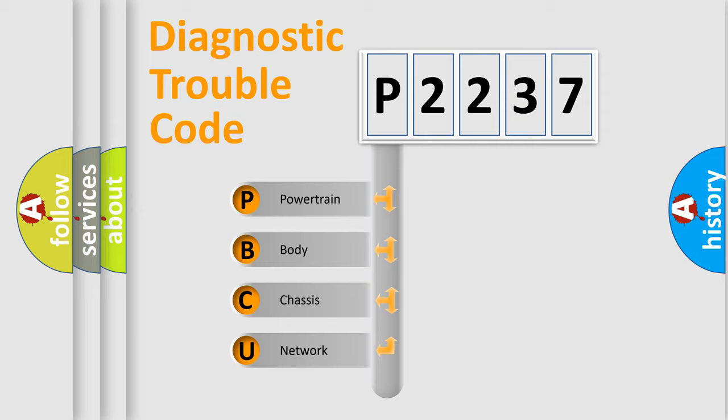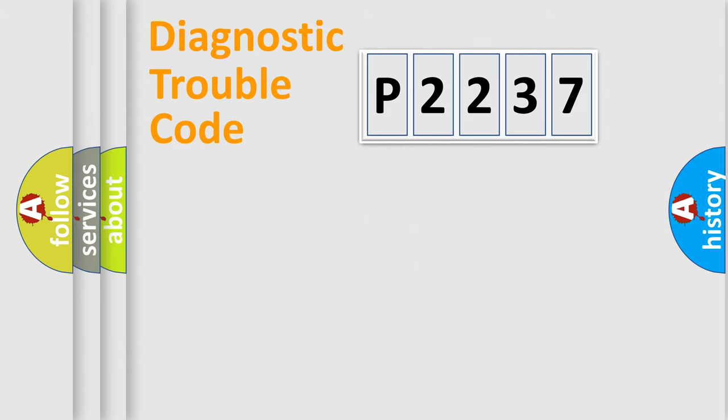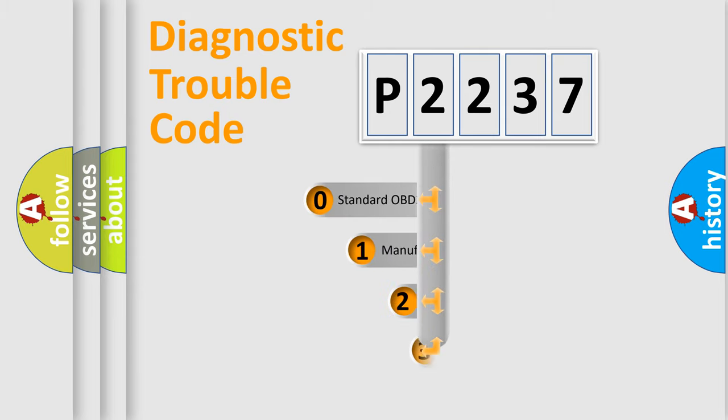We divide the electric system of automobile into four basic units: Powertrain, Body, Chassis, and Network. This distribution is defined in the first character of the code.